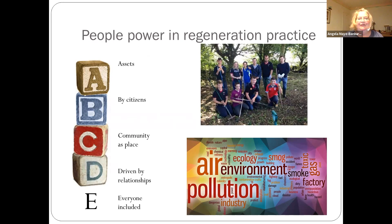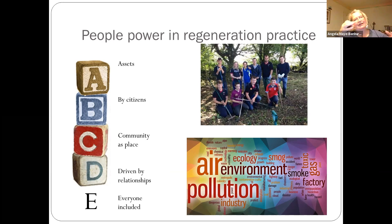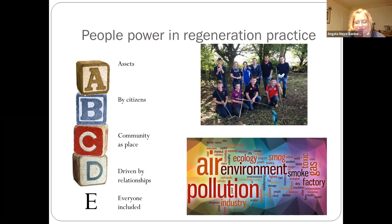When thinking about people power and regeneration, I like the acronym ABCD — I've added an E at the end so we can focus on equality and equity. People are assets; citizens can change things; community as place, driven by relationships. There's a lot of reference in the literature on the importance of social networks and social interrelationships in terms of creating opportunities for communities to thrive. This links to the literature on sustainable regeneration practice in relation to the social, but also to more abstract philosophical debates around social capital — which is just as important as economic capital — and I'll be giving a lecture on that in semester two.